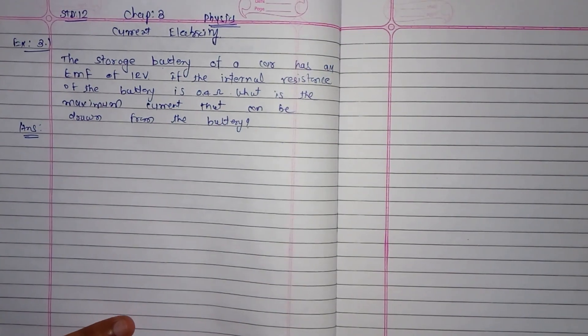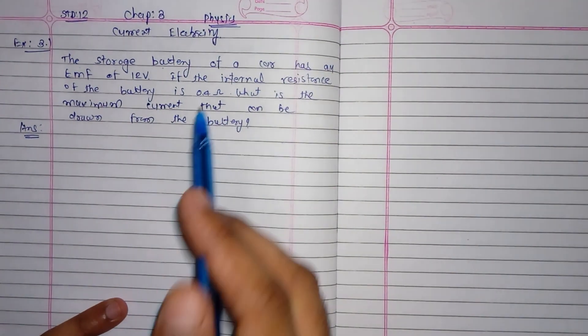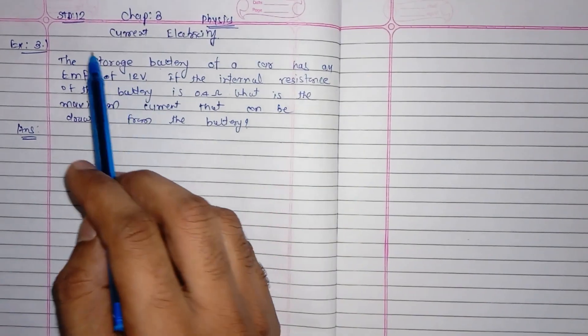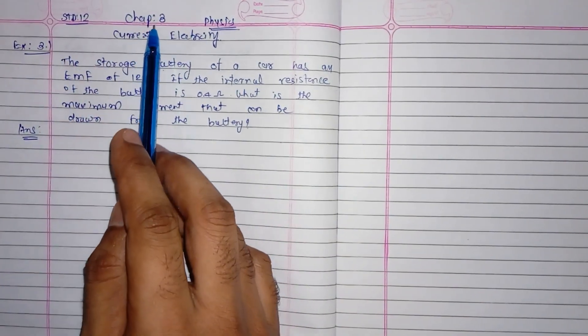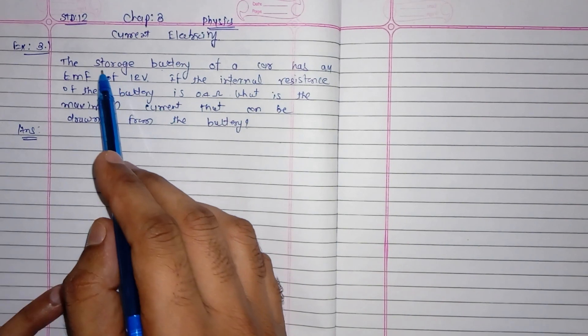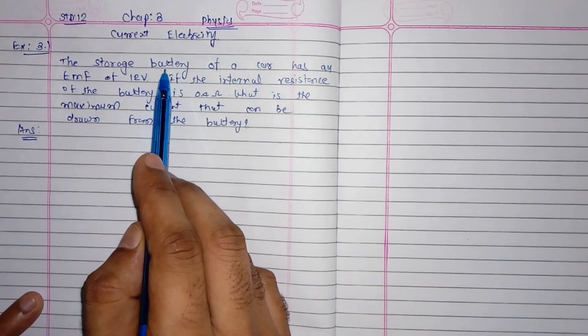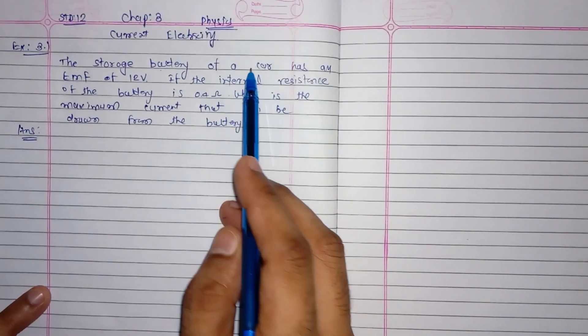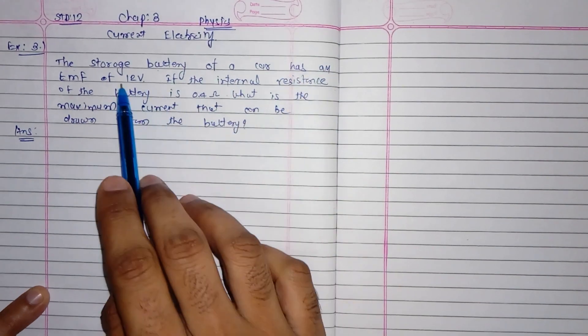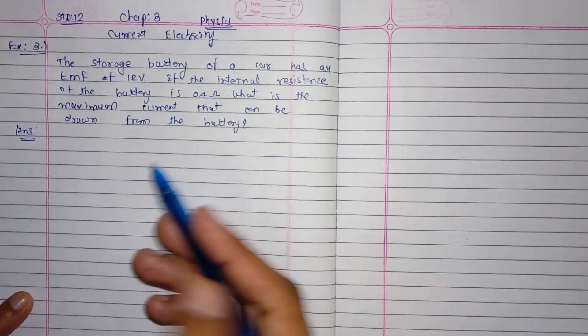Hello and welcome to everyone, myself Chagar. Today I am going to teach you Exercise 3.1, Chapter 3, Current Electricity. The equation given is: The storage battery of a car has an EMF of 12 volts. Okay, so we'll note down EMF of this car battery is equal to 12 volts.